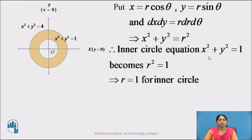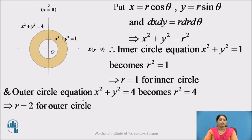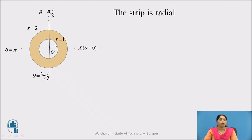Therefore, the inner circle equation x² + y² = 1 becomes R² = 1, which gives us R = 1 as the equation of the inner circle. Similarly, the outer circle equation x² + y² = 4 becomes R² = 4, therefore R = 2 as the equation of the outer circle. The same region is now written in polar form with inner circle R = 1 and outer circle R = 2. The region of integration is the left half of this annular region. As the example is now expressed in polar form, we have to draw a radial strip.